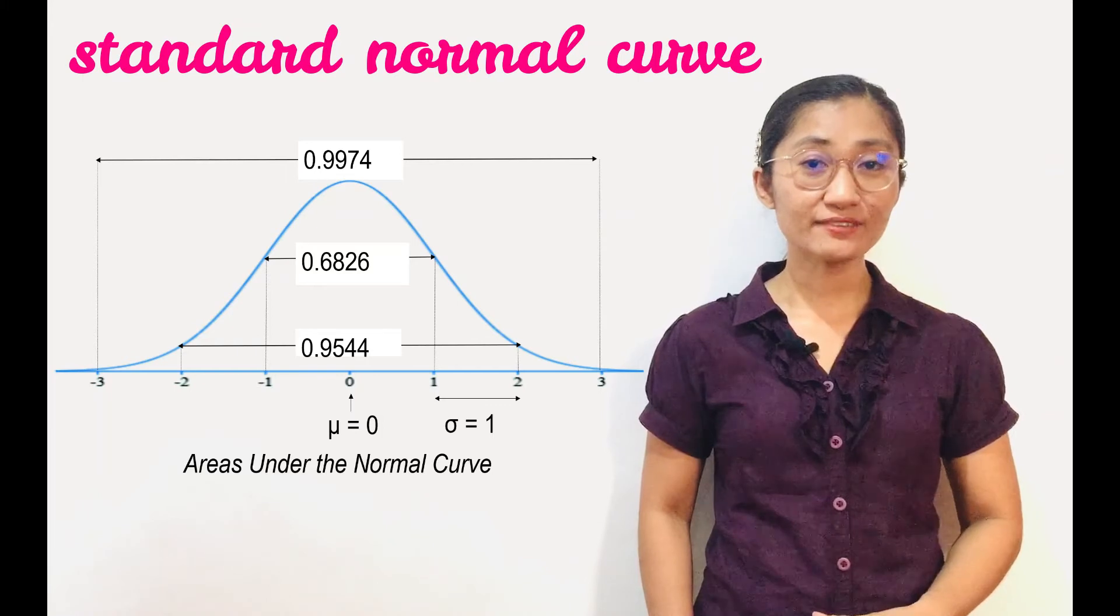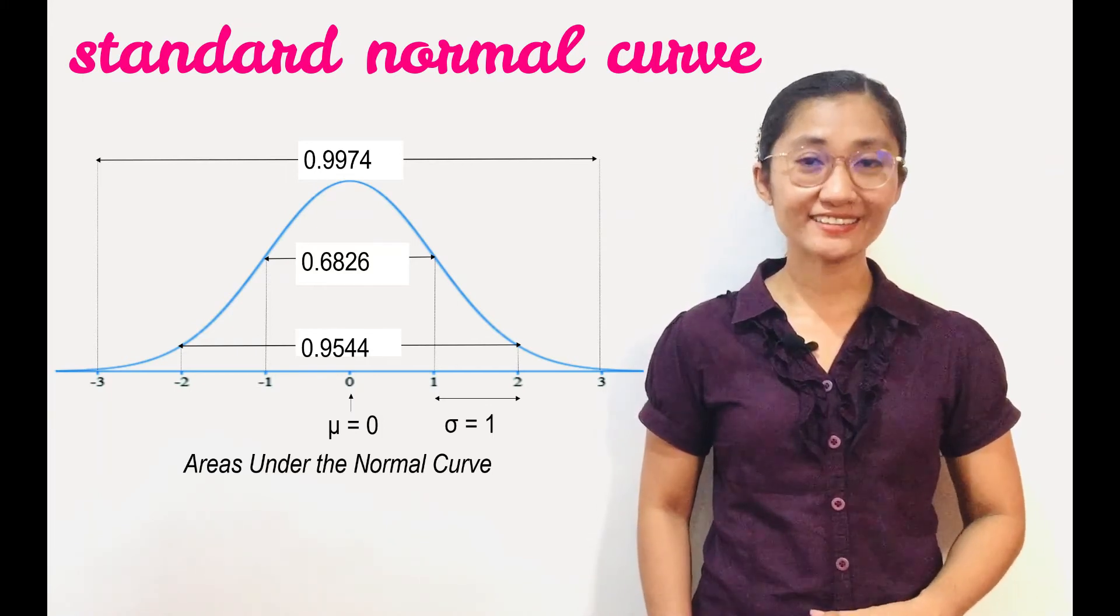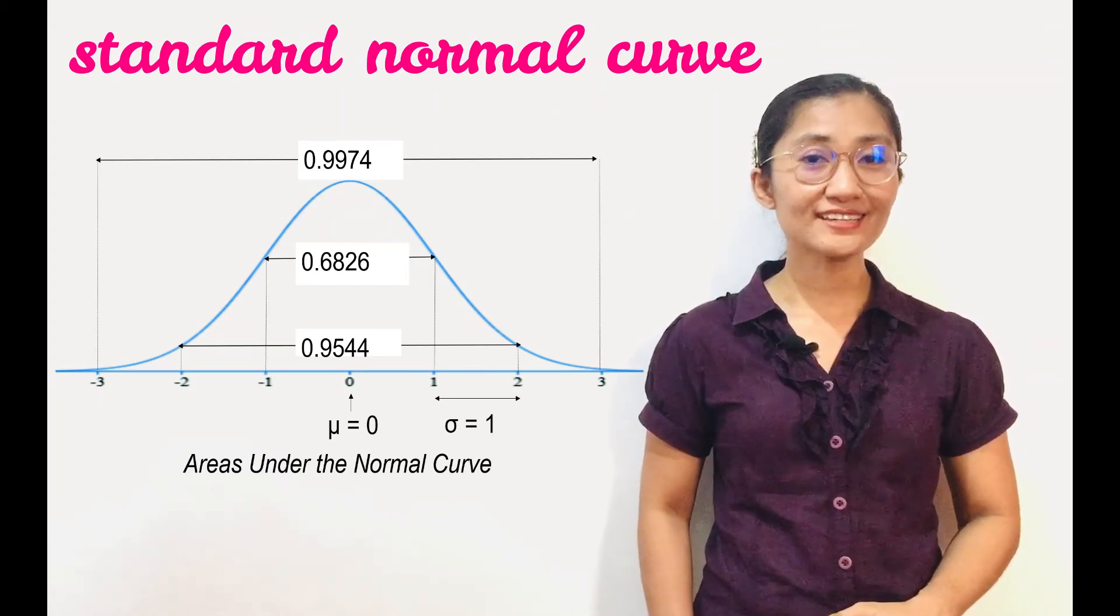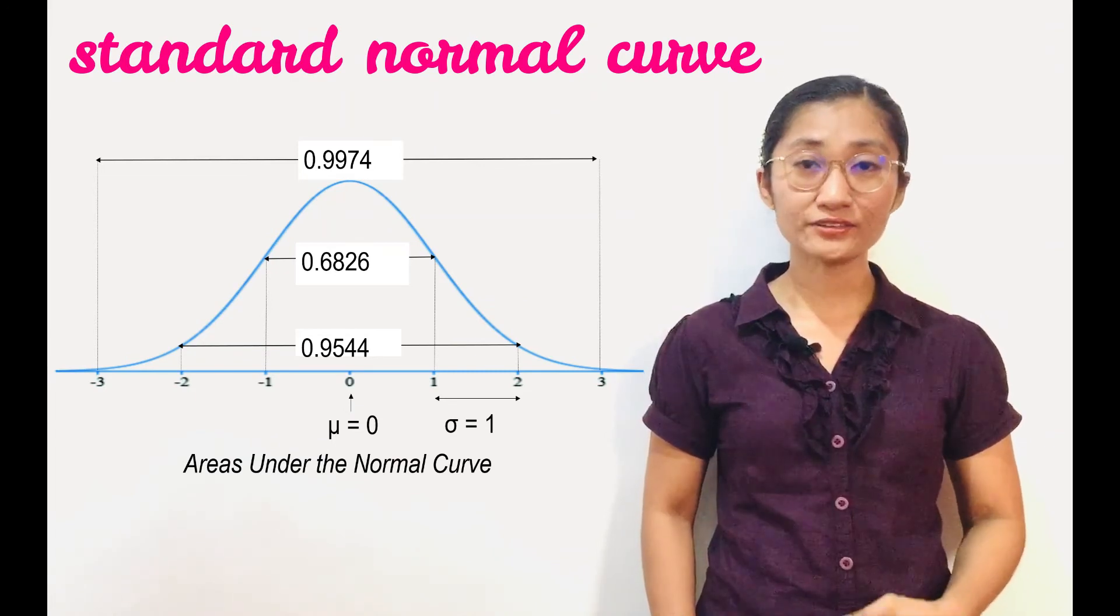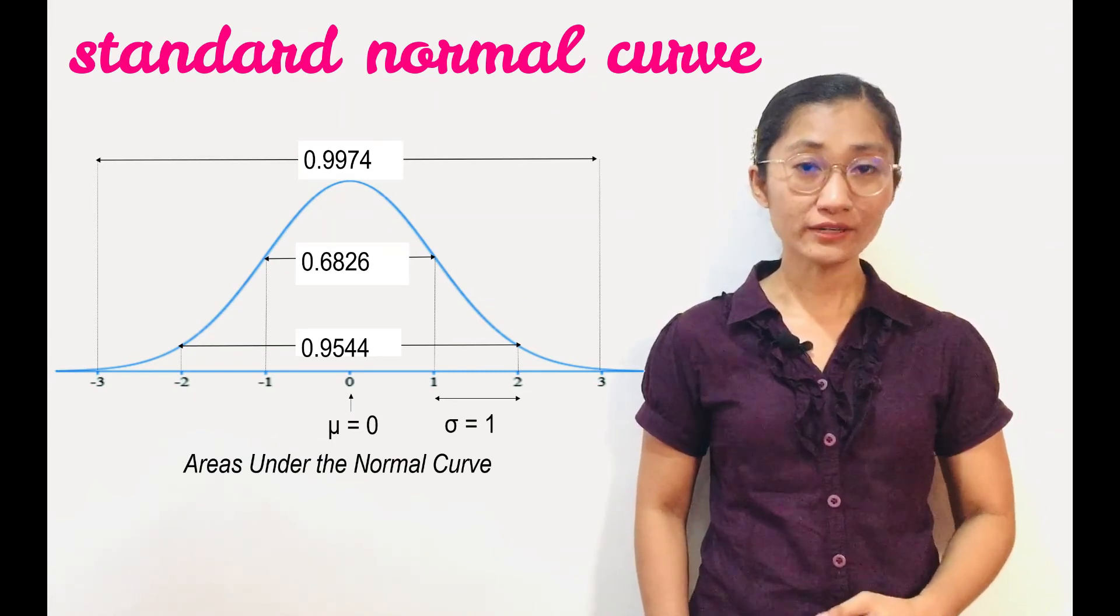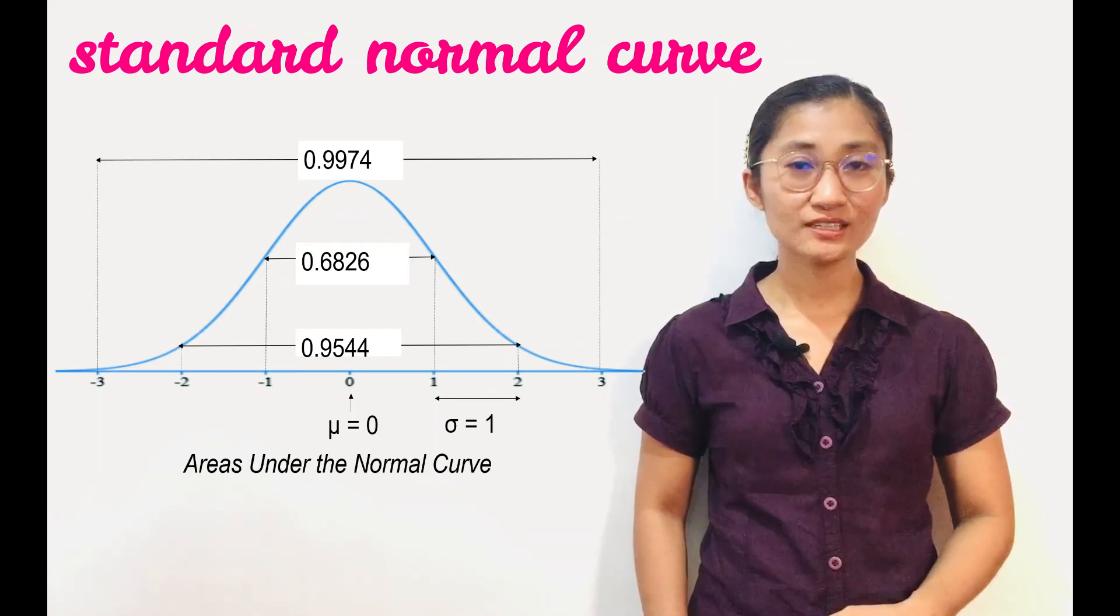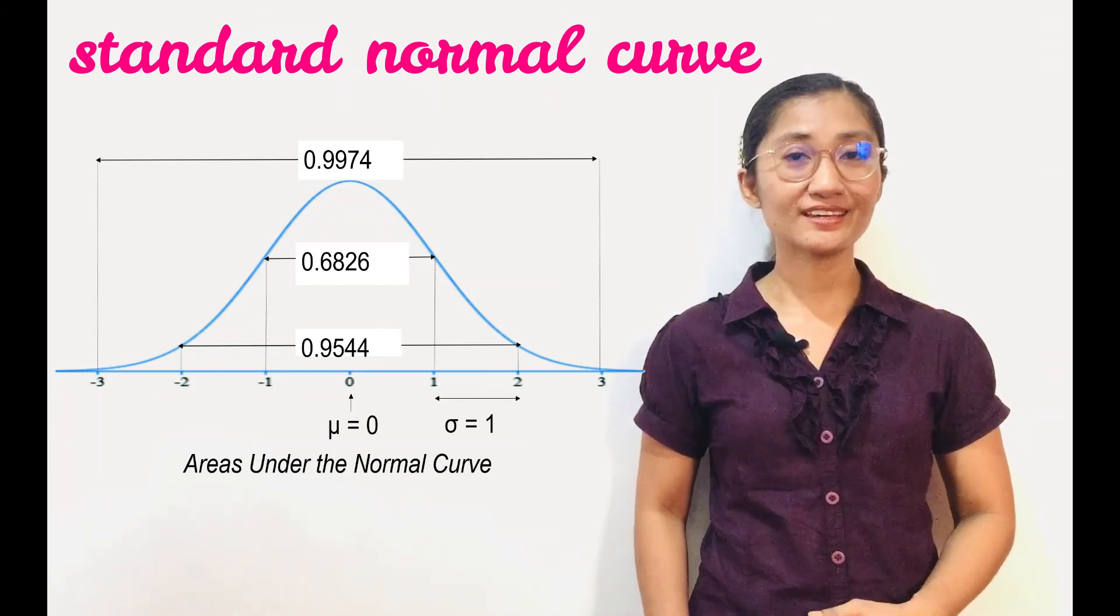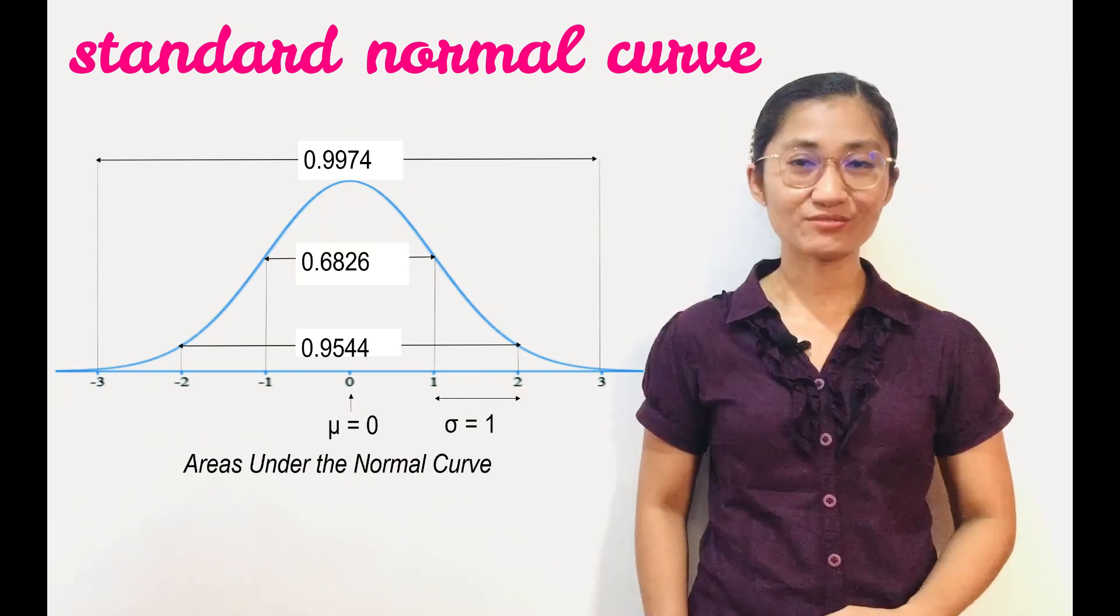And from negative 3 to 3, it is 0.9974. Recall that the curve is asymptotic. Though the area under the curve is 1 or 100%, the area from 3 standard deviations below the mean to 3 standard deviations above the mean is not 1, but 0.9974.